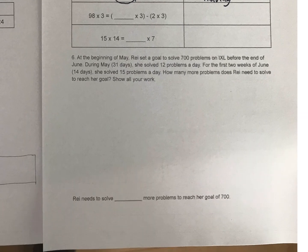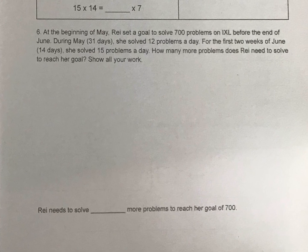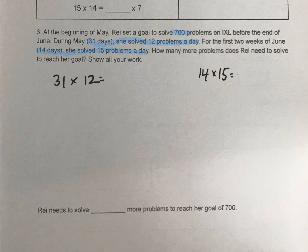Then the other ones do on your own. And then we have this problem here for Ray. So Ray's goal is to solve 700 problems on IXL. In May, 31 days, she solved 12 problems a day. And in the first couple weeks of June, for 14 days, she solved 15 problems a day. So how close is she to her goal?